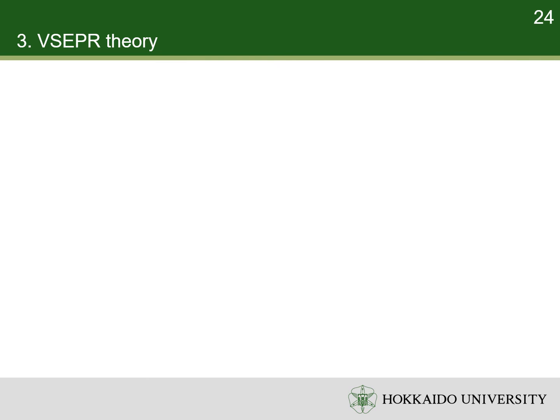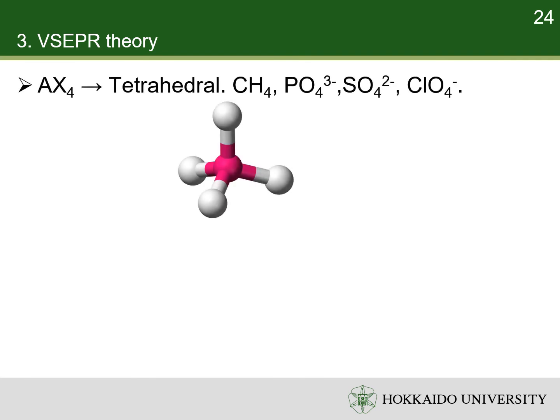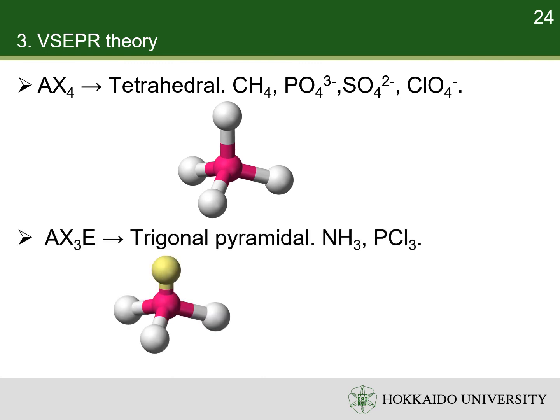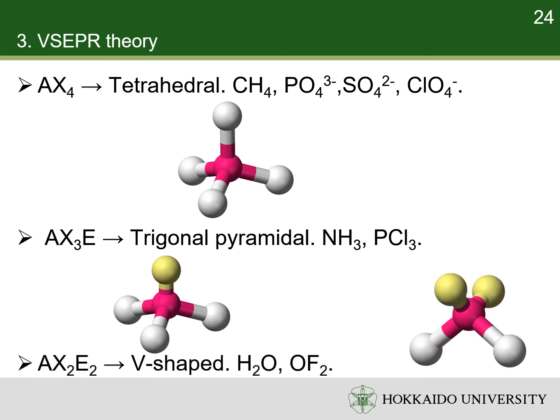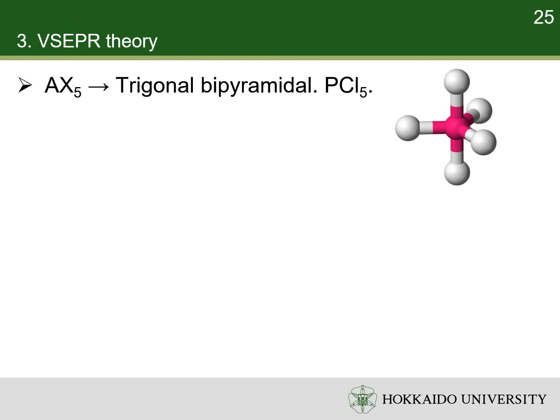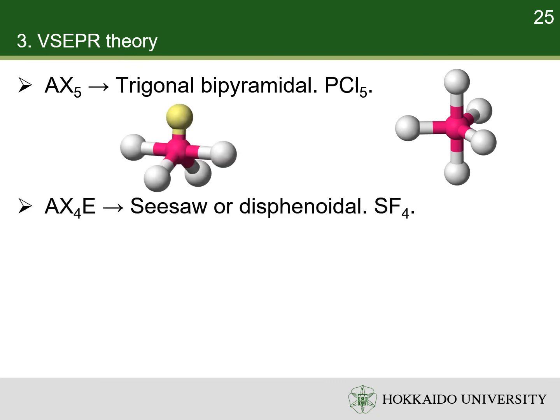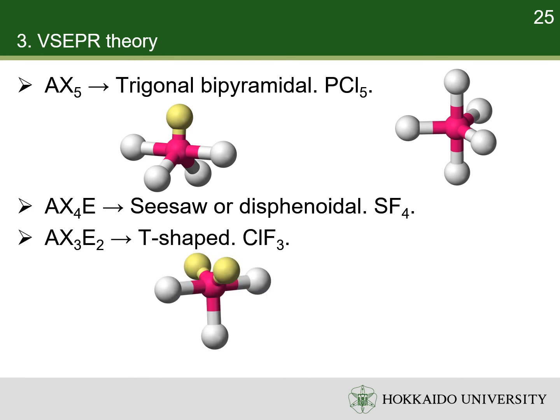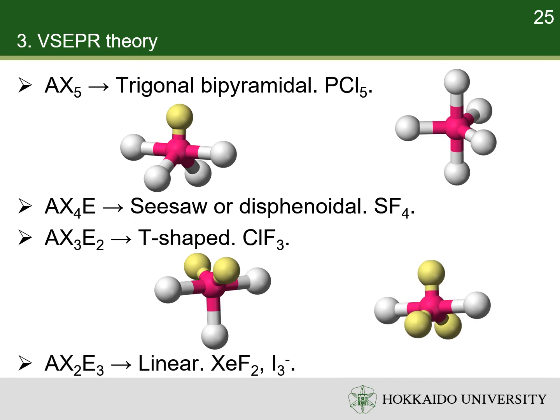For the following pages, please draw the Lewis structures by yourself and check if they are in accordance with the structures given in the lecture slides. AX4 molecules such as methane have tetrahedral shapes. AX3E molecules such as ammonia have trigonal pyramidal shapes. AX2E2 molecules such as water have V shapes. AX5 molecules such as phosphorus pentachloride have trigonal bipyramidal shapes. AX4E molecules such as sulfur tetrafluoride have seesaw shapes. AX3E2 molecules such as chlorine trifluoride have T shapes. AX2E3 molecules such as xenon difluoride have linear shapes.